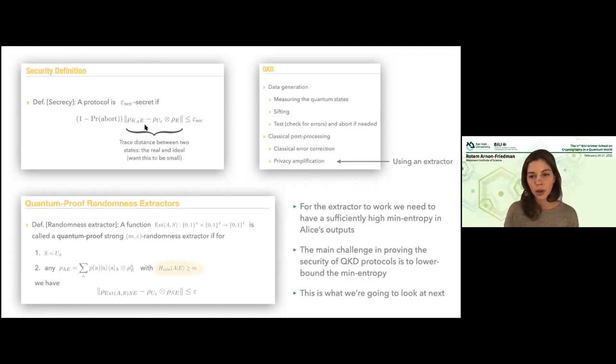This is what we will need to show next. The main challenge when proving security of QKD protocols is to show that this conditional min-entropy is high. Once it's high, the extractor works and we get secrecy. We will do this in the next lecture.